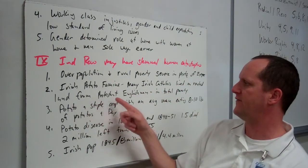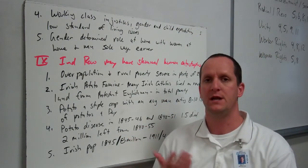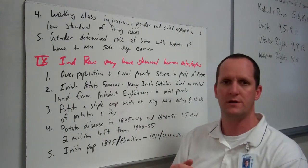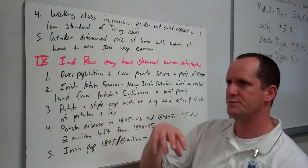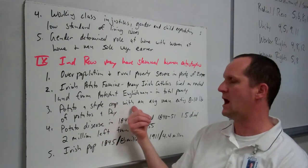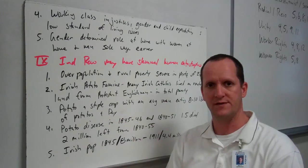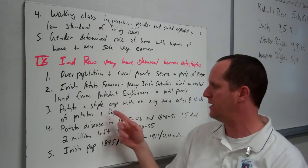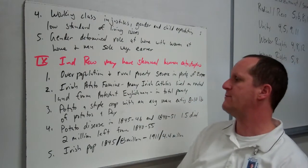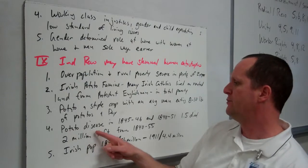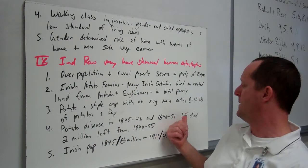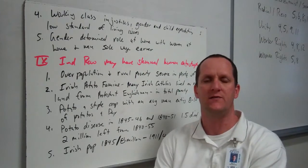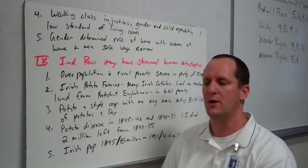One classic example is the Irish potato famine. Many Irish Catholics lived on rented land from Protestant Englishmen in total poverty and did not have the means to get themselves out of those terrible conditions. The potato, brought over during the Columbian Exchange, became a staple crop in Ireland and thrived there — with the average man eating 8 to 10 pounds of potatoes a day. A potato disease struck from 1845 to 1846 and 1848 to 1851. 1.5 million people died, and eventually 2 million left from 1840 to 1855, the majority coming to America.